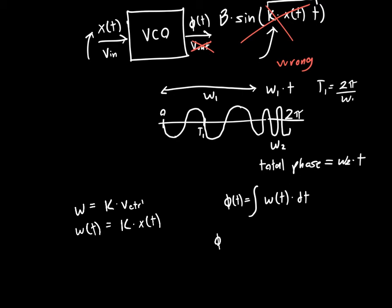So if we plug in our function for frequency, we said that frequency of a voltage controlled oscillator was just some constant K times the control voltage V control. Or if we want omega to be a function of t, we can just say that it's K times some x(t). So then our phase is just the integral from zero to some time t of omega as a function of t, which is K times x(t), dt.